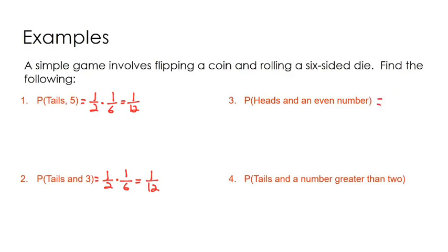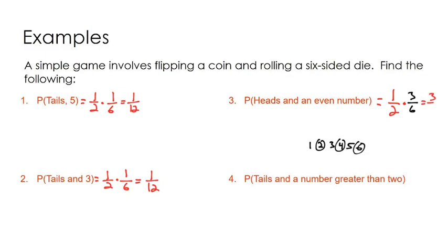Probability of heads and an even number. The coin flip is the easy part — that's one half. What's the probability of getting an even number on the die? There are six total outcomes and three successes — two, four, and six. So three successes out of six outcomes for that die roll gives us three twelfths, which is one fourth. There's a one in four chance of this event happening.